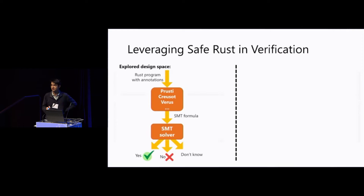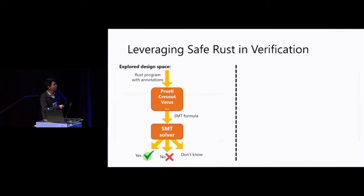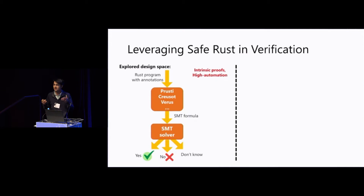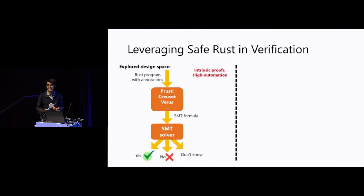Most of those frameworks explore one point in the design space. Typically they require the user to annotate Rust programs with preconditions, postconditions, loop invariants, or ghost variables. They then use those annotated programs to generate verification conditions — simplified by leveraging the Rust type system — and send those to SMT solvers, which say yes, no, or ask for more information. These are intrinsic proofs where you annotate programs directly and use SMT solvers for automation.